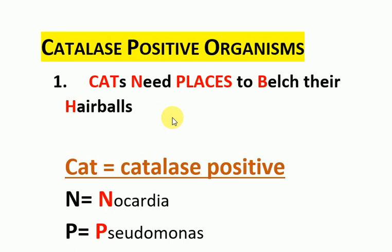If no bubbles are produced, the result is negative and no catalase-positive organisms are present. To memorize the names of the catalase-positive organisms, the mnemonic is: 'Cats need places to burst their head balls.'